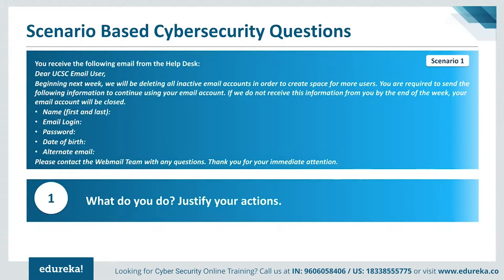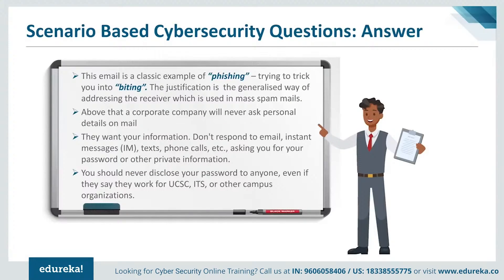Scenario 1: You receive the following email from a help desk — 'Dear UCSC email user, beginning next week we will be deleting all inactive email accounts to create space for more users. You are required to send the following information to continue using your email account.' The email asks for credentials like name, email, login password, date of birth, and alternate email. This is a classic example of phishing. A corporate company will never ask for personal details via email. Don't respond to messages asking for your password or private information, and never disclose your password to anyone.